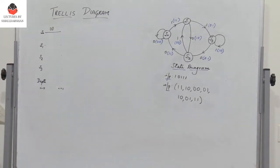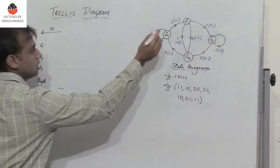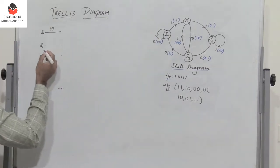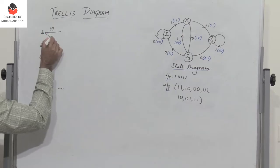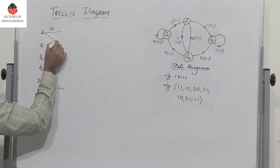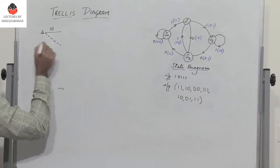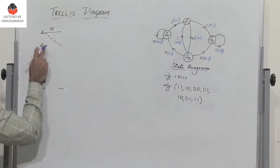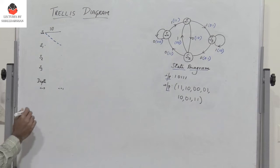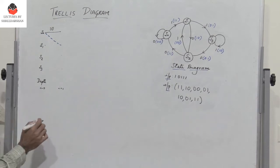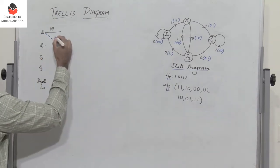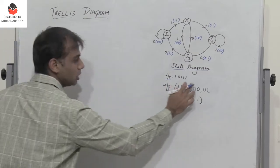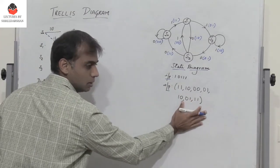Now if the input is 1, I go to state s1. That is indicated by a dashed line, which I have indicated in blue, and we find that the output is 1,1. We will see how to get the output later. We will first draw the trellis diagram.